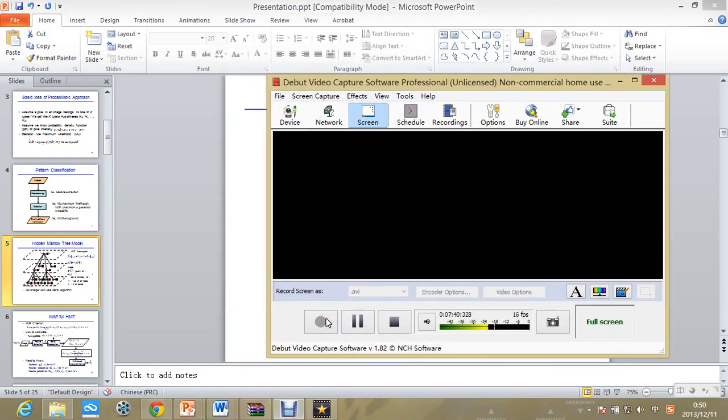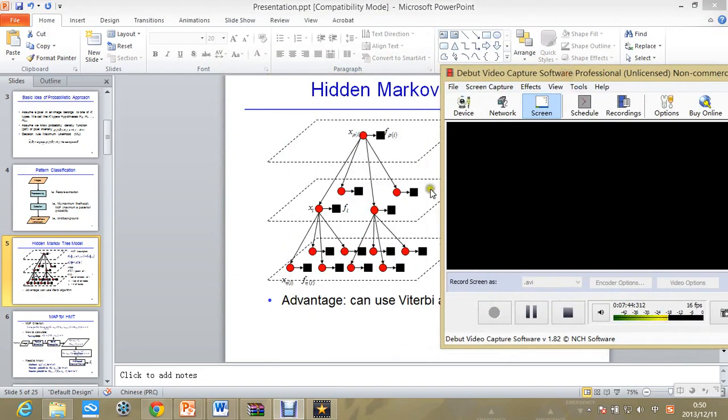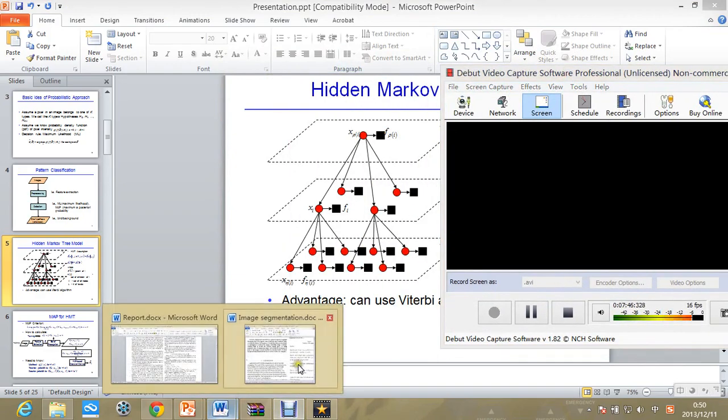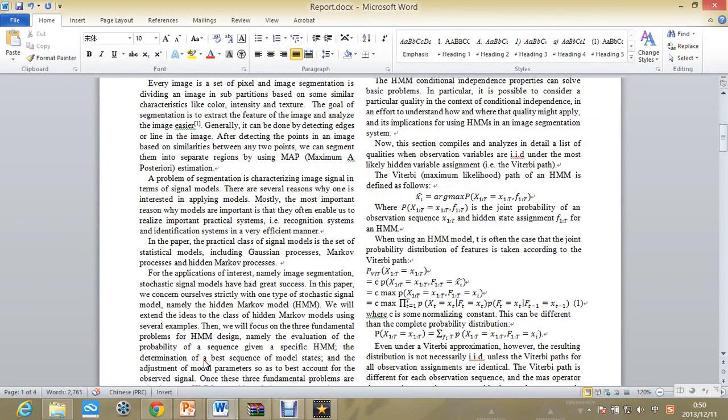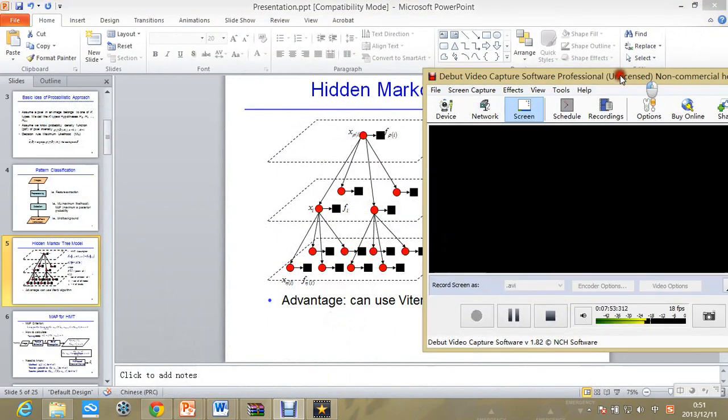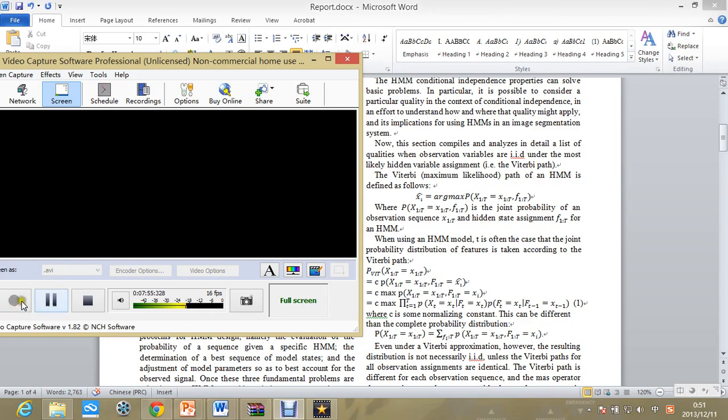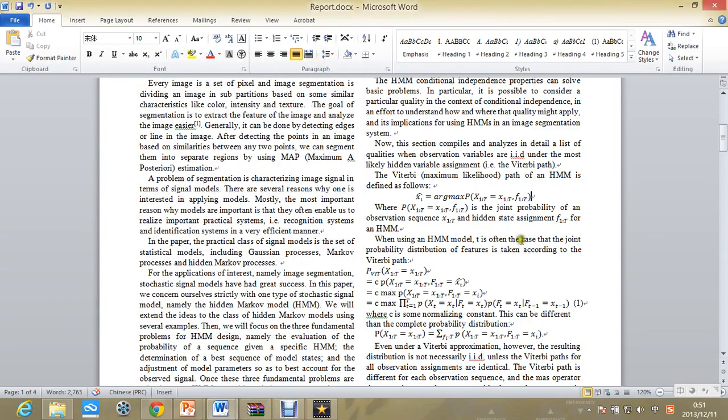And the Viterbi algorithm is shown as follows. In this formula, P is the joint probability of the observation sequence and hidden state assignment F.